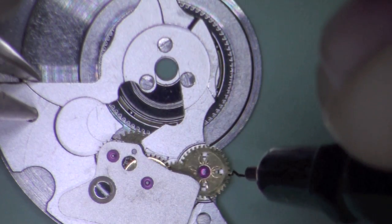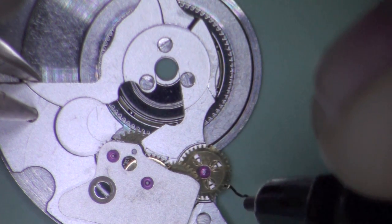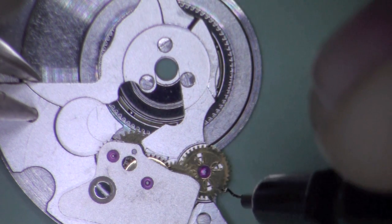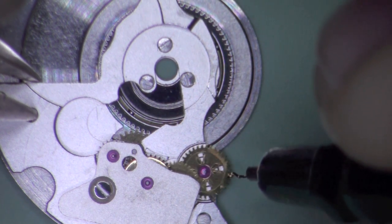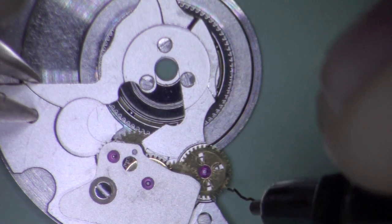In this improperly serviced 2892 automatic module, notice the amount of deflection of the brass bristle. It has so much resistance due to the reverser dragging that it almost does not slip utilizing this function check.